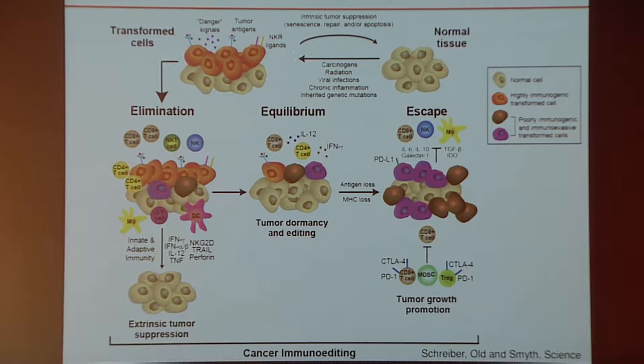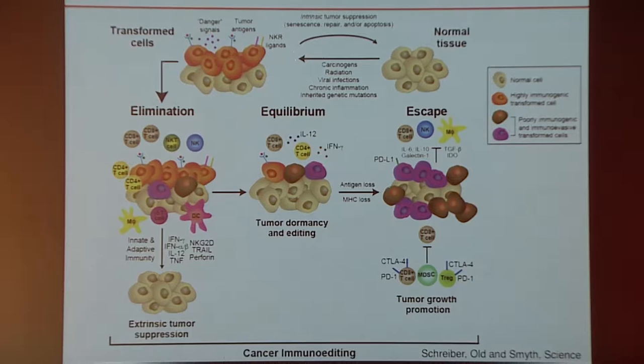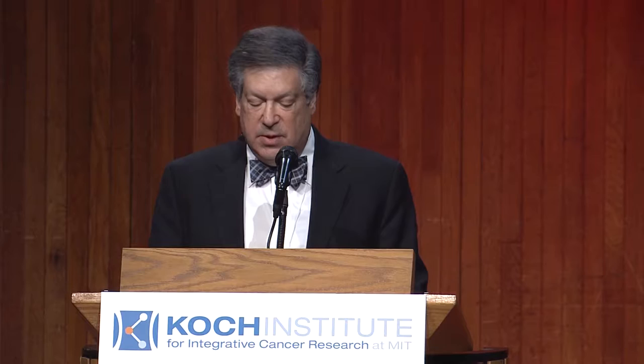Every once in a while, this process won't go to completion. There'll be some residual tumor cells left in the host, and it's at that point that they enter the second phase that we've called equilibrium — a phase in which tumor cells persist in the host, are unable to be destroyed, but nevertheless are unable to grow out progressively because they're being held in an immune-mediated state of dormancy. It's in equilibrium that editing occurs. If the editing process goes to completion and these tumor cells are sculpted by their interaction with immunity such that they are no longer recognized and controlled by the adaptive immune system, they enter the final phase called escape, in which these tumor cells now begin to grow progressively, establish an immunosuppressive tumor microenvironment, and become the manifestation of the disease that we know as cancer.